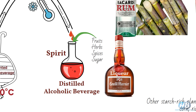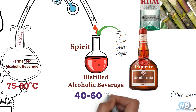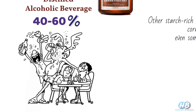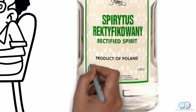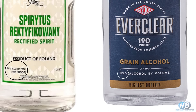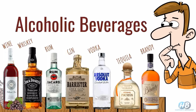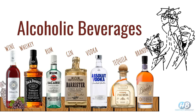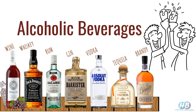Generally, most distilled spirits range from 40 to 60% ABV. But if we go for re-distillation, we can also increase the alcohol content. The strongest liquor in the world is Spiritus with 96% ABV, and Everclear with 95% ABV. Always enjoy it responsibly. Thank you.